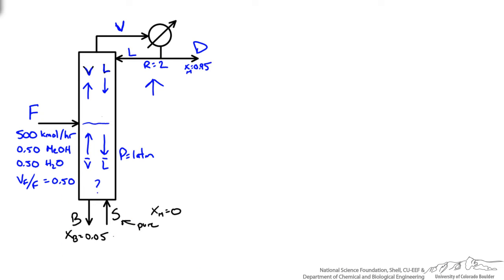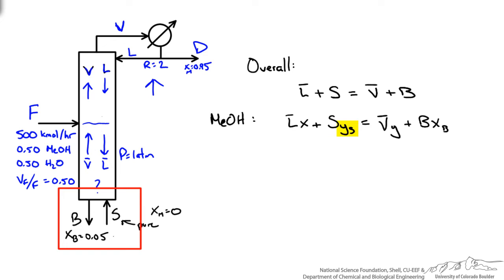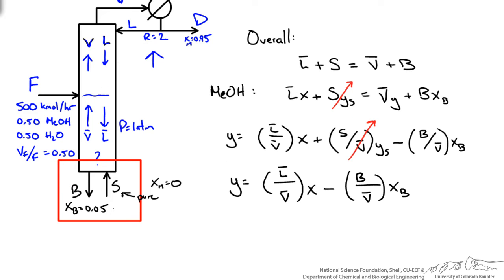Let us do a balance over this bottom section where the steam enters into our column. In terms of what is coming in we have L prime coming in as well as our steam. This is going to be the vapor leaving plus our bottoms. Now if we do a methanol balance we have this designated ys for our mole fraction of methanol in the steam which right away we should see would be 0. We can solve in terms of y. You can see I have that second term still there just to show you that if it did come in as some methanol for some reason we could account for that term. But in this case our ys is 0, so our operating line simplifies into the following form.